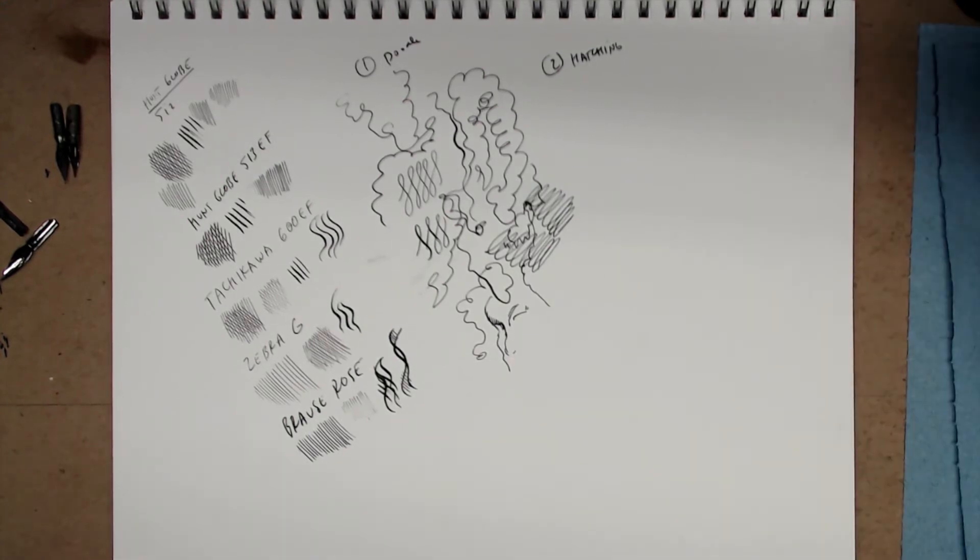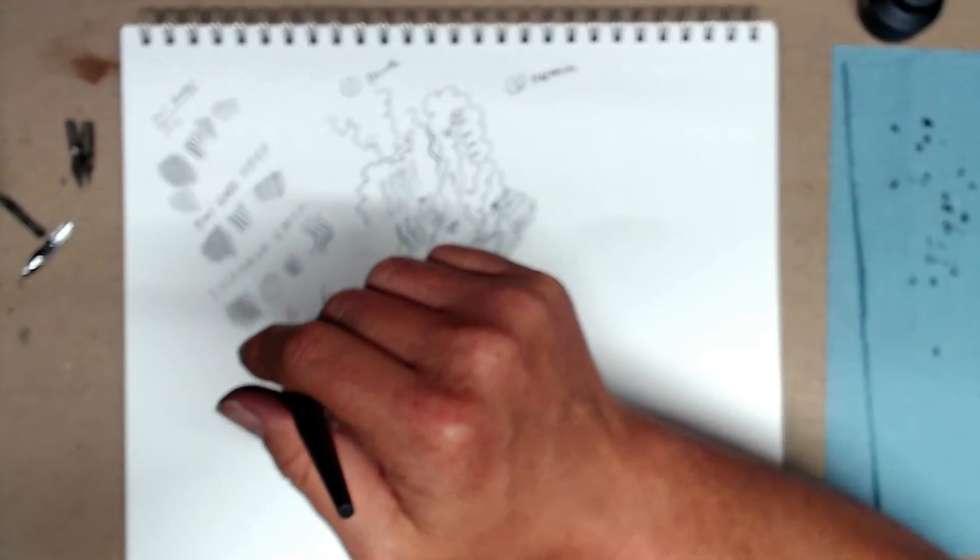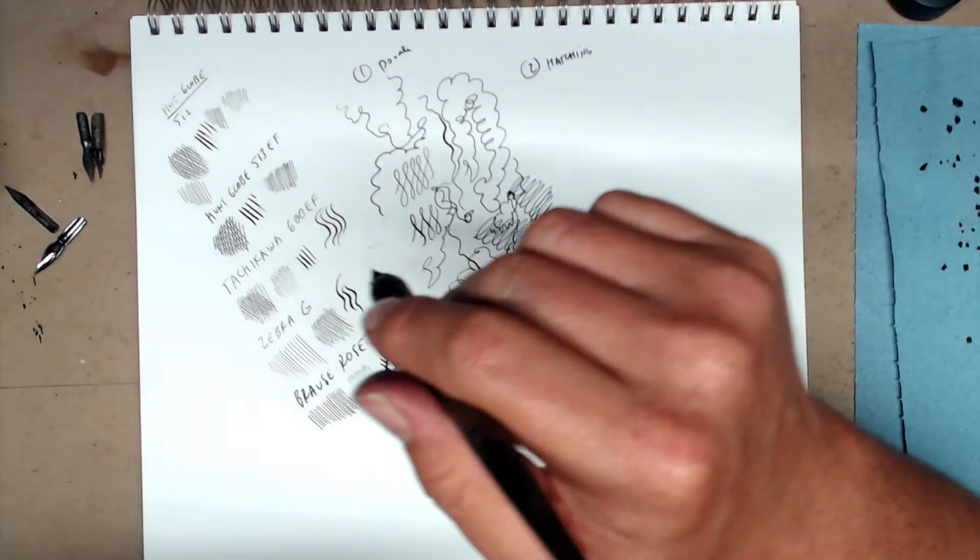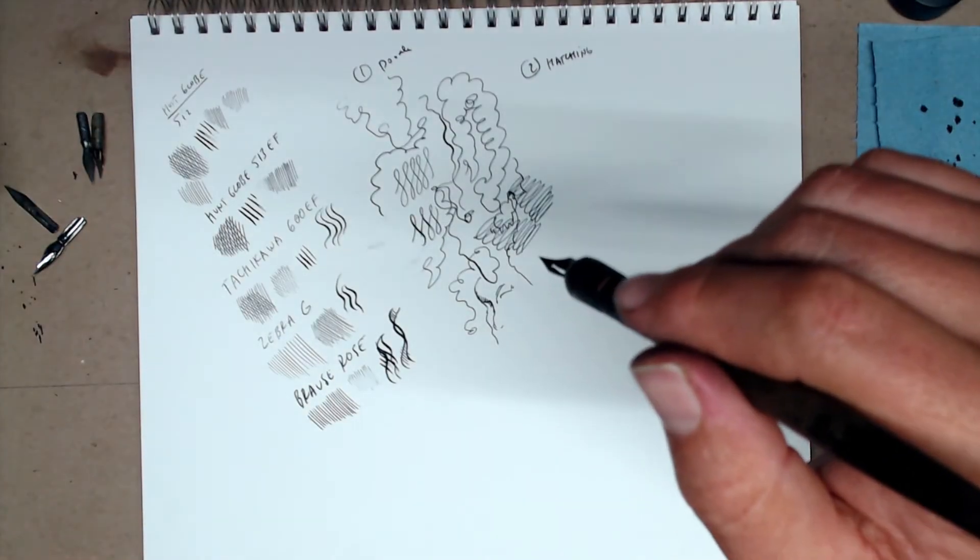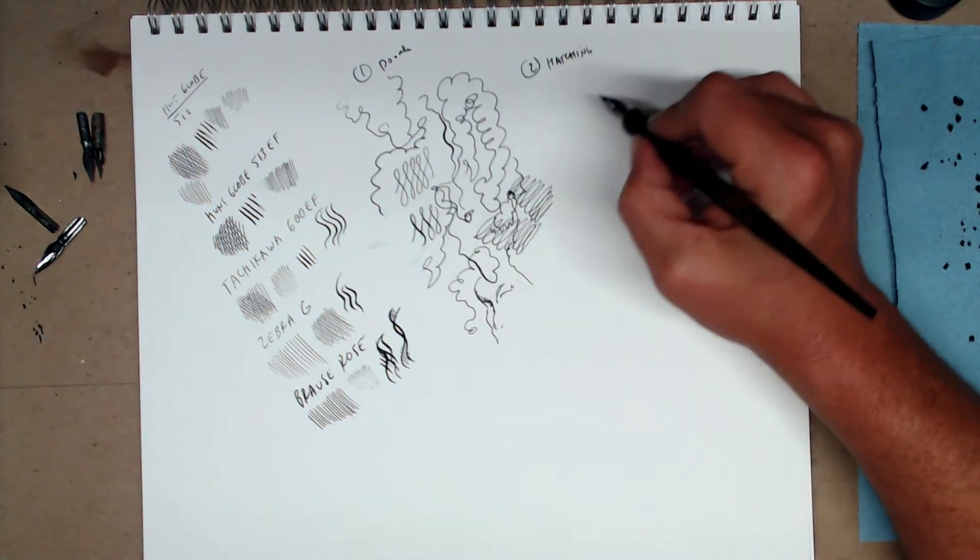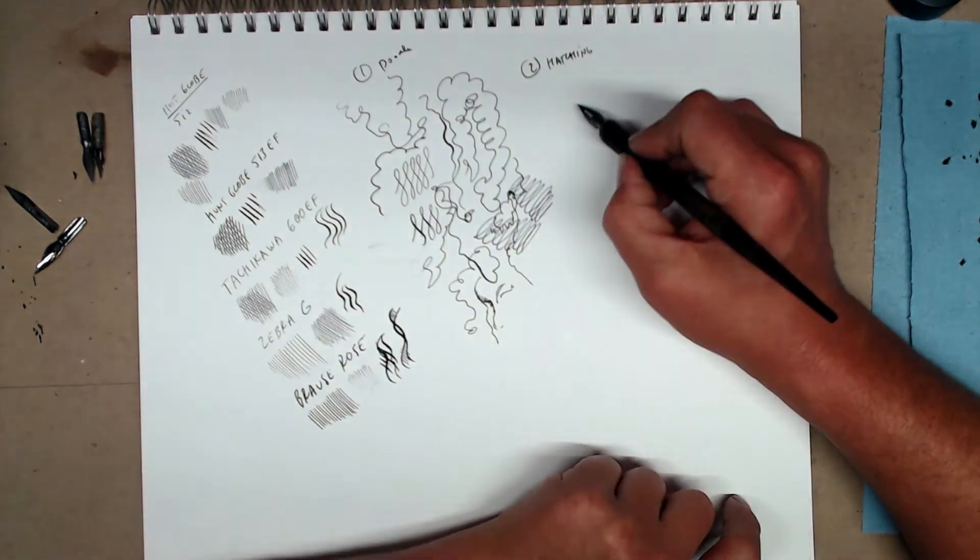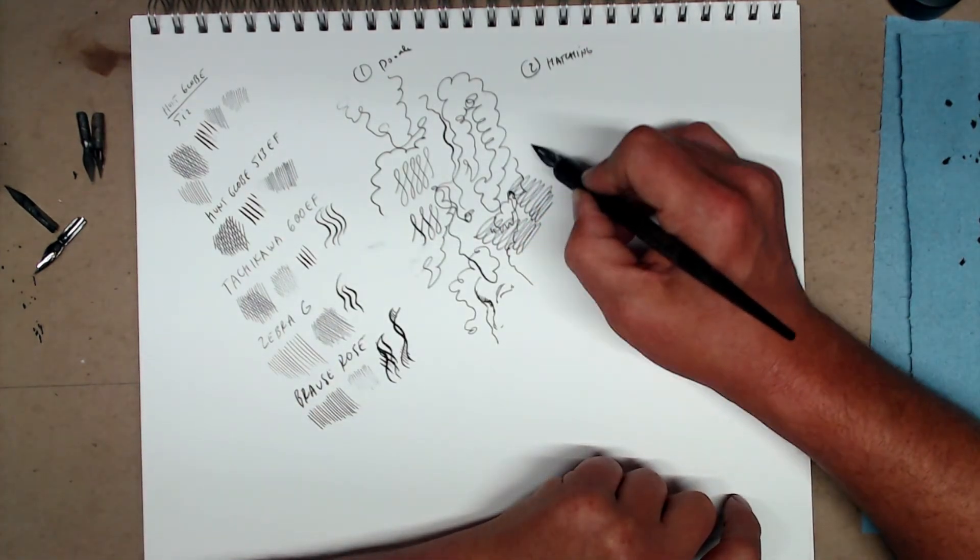So let's practice the two different kinds of hatching we're going to use in this class to apply value. The first one is pretty easy. It works like this. Let me zoom out a little bit so you can see. Okay, so I'm going to plant my elbow on the table, or on the drawing board if it's big enough. And then use the elbow as a fulcrum to move my arm back and forth. Usually, hatching works from the top down. So from here, this way.